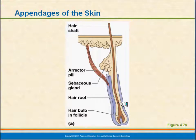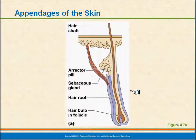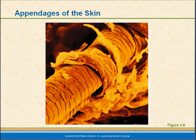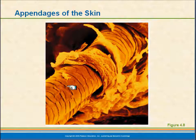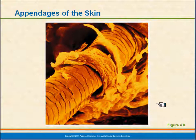The overall structure looks something like this. We have a hair, an erector pili muscle which tightens up to cause the hair to stand up, and glands associated with the hair as well. This is a close-up photo of a hair, and you can see the scale-like quality. These are flattened out, dead cells that have been tightly packed and filled with melanin.